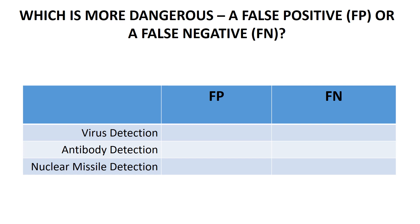For virus detection, a false negative seems worst. If you tell someone they don't have the virus but they actually do — a false negative — they go out and infect others. A false positive — telling someone they have the virus when they don't — means they just isolate for a week or two, which is not as much of a problem.